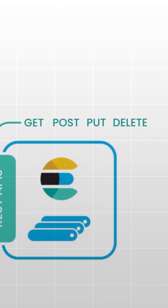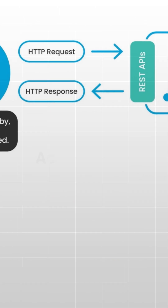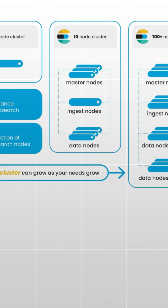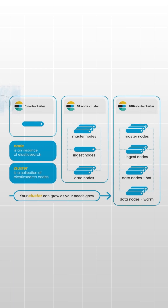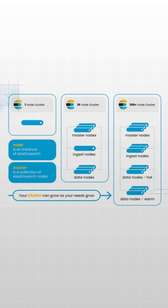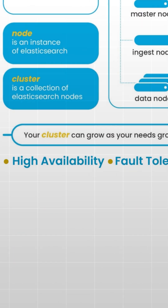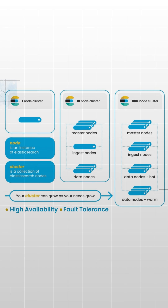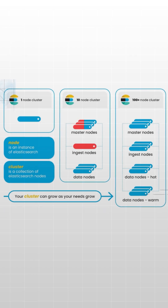Elasticsearch is not just about storing data — it's about making it accessible and searchable. Its distributed architecture allows you to scale out your cluster easily by adding more nodes. This ensures high availability and fault tolerance, meaning your data remains accessible even if some nodes go down.